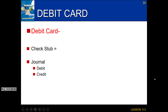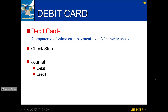The other type of transaction that would affect your checking account is using a debit card. A debit card is also a computerized or online cash payment — you're not actually writing a check, but your debit card is the same thing as writing a check or paying with cash out of that account. So it also has to get recognized on our check stub under other, and we also have to journalize it.